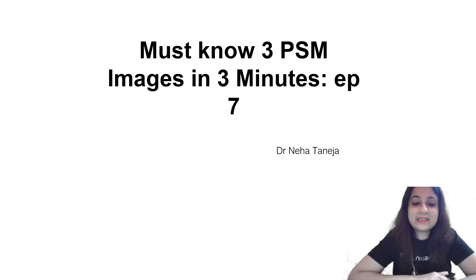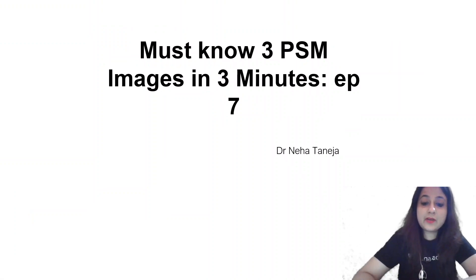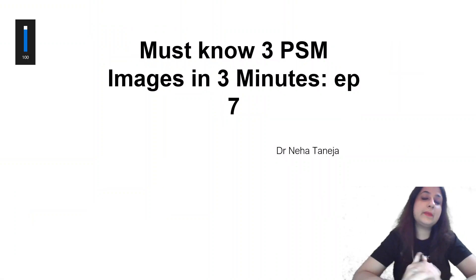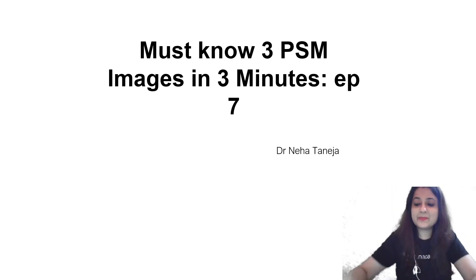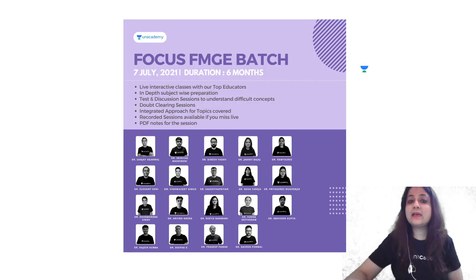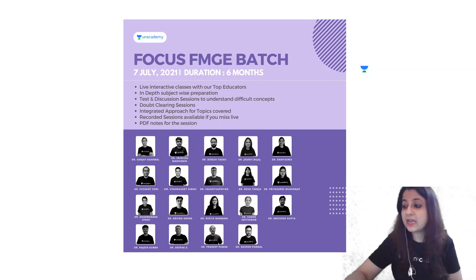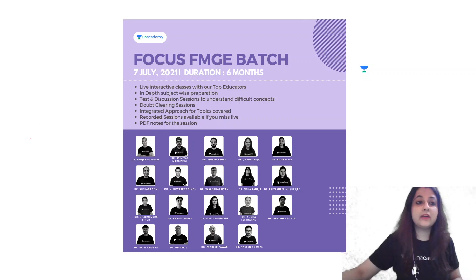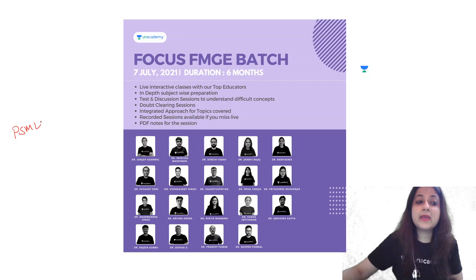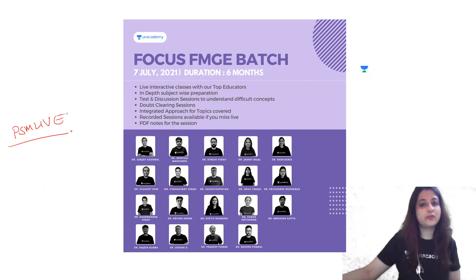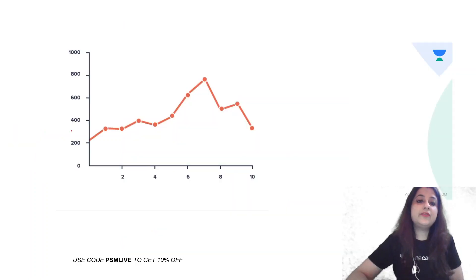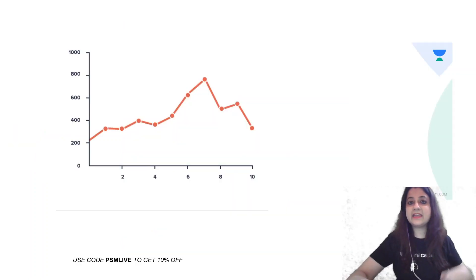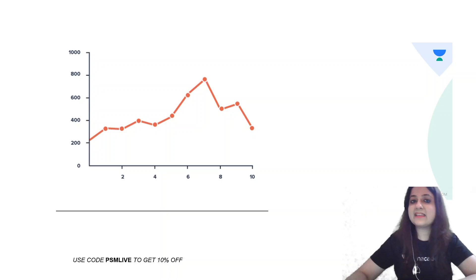Hello everyone, welcome back to another episode of 'Must Know 3 PSM Images in 3 Minutes.' We've started a batch for FMG on 7th July, so if you haven't subscribed yet, you can use my code PSMLIVE and get 10% off on your subscription. The first image for the day — can you identify which statistical diagram this is?